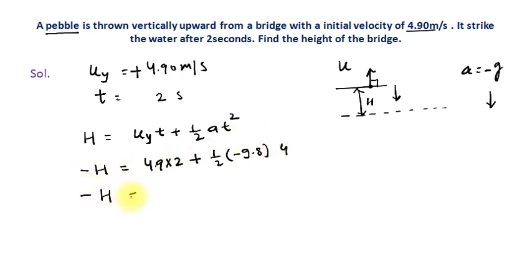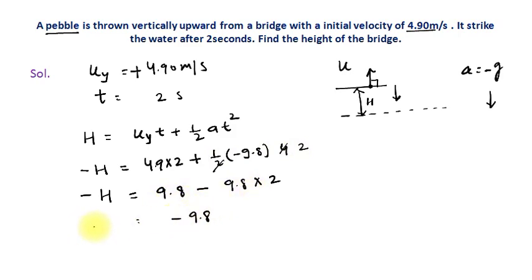So minus h equals 9.8 minus 19.6, which gives 9.8 multiplied by 2. The height of the bridge works out to 9.8 meters.